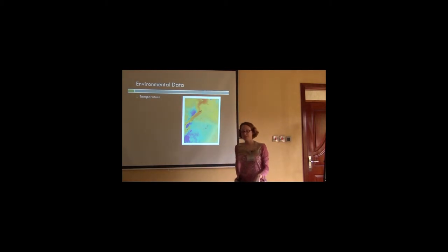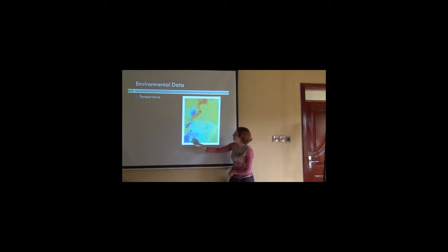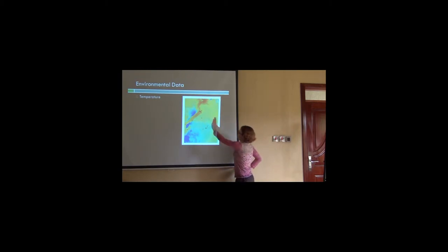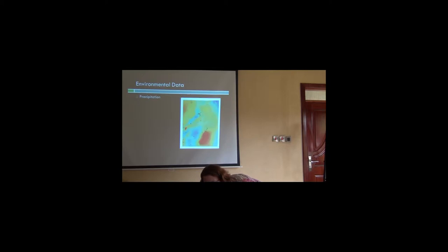This is an example of an interpolated surface for temperature across Uganda. You can see higher temperatures in certain regions and lower temperatures in the blue areas. This is the Lake Victoria area. You can see where your occurrence points lie across the gridded surface and get an idea of which environments your sample points are representing across your entire study region.